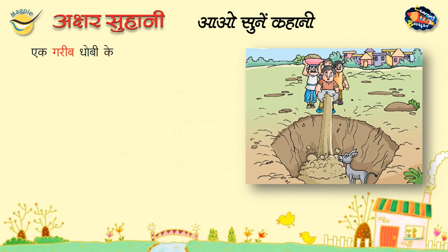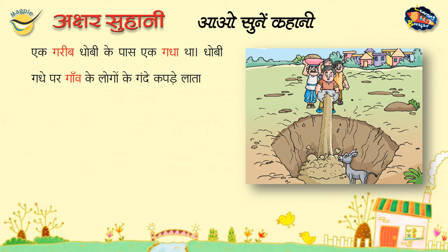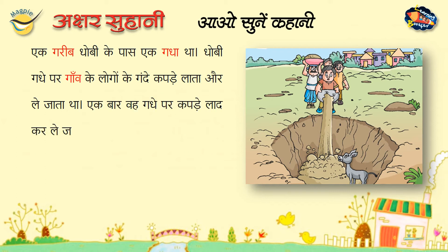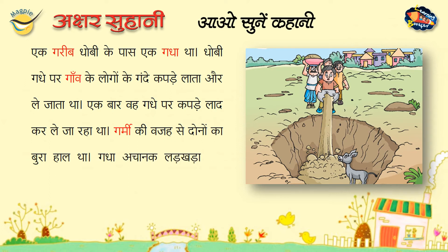एक गरीब धोबी के पास एक गधा था। धोबी गधे पर गाँव के लोगों के गंदे कपड़े लाता और ले जाता था। एक बार वह गधे पर कपड़े लाद कर ले जा रहा था। गर्मी की वजह से दोनों का बुरा हाल था। गधा अचानक लड़खड़ा कर कुएँ में जा गिरा। कुआँ बहुत गहरा था।